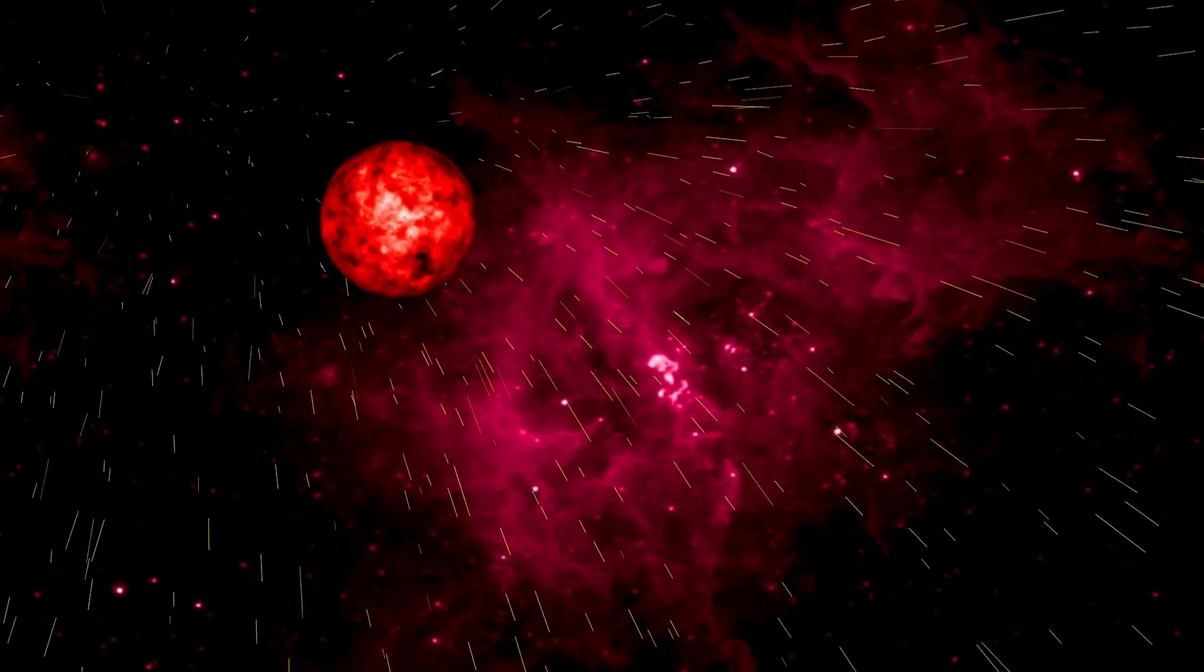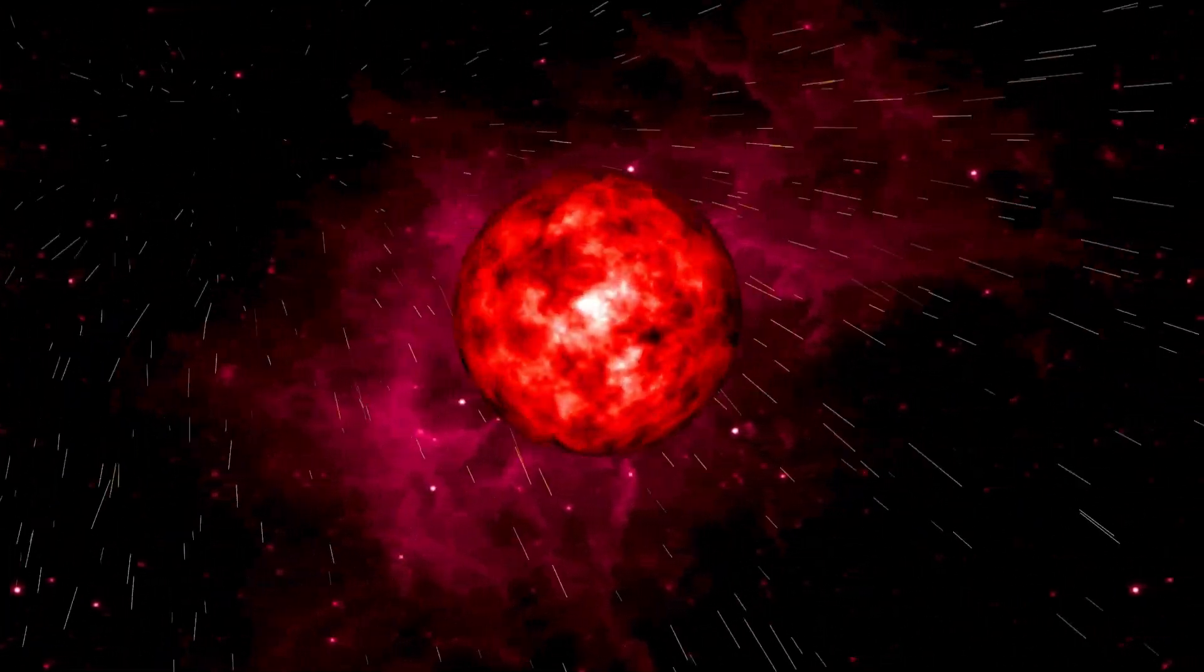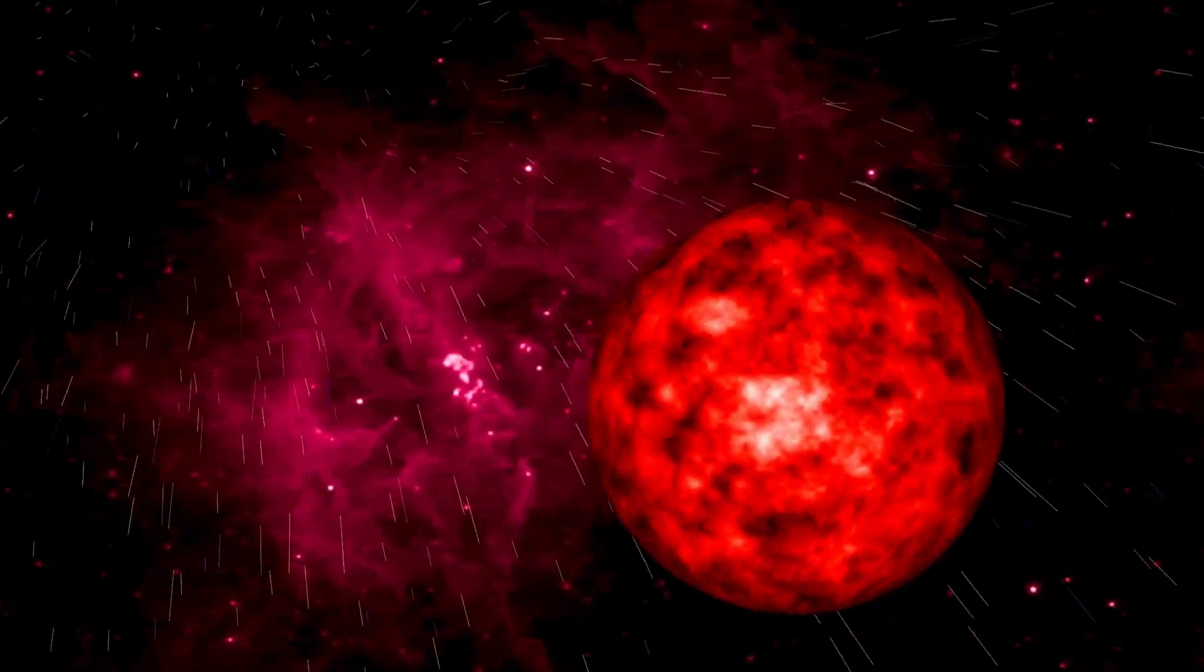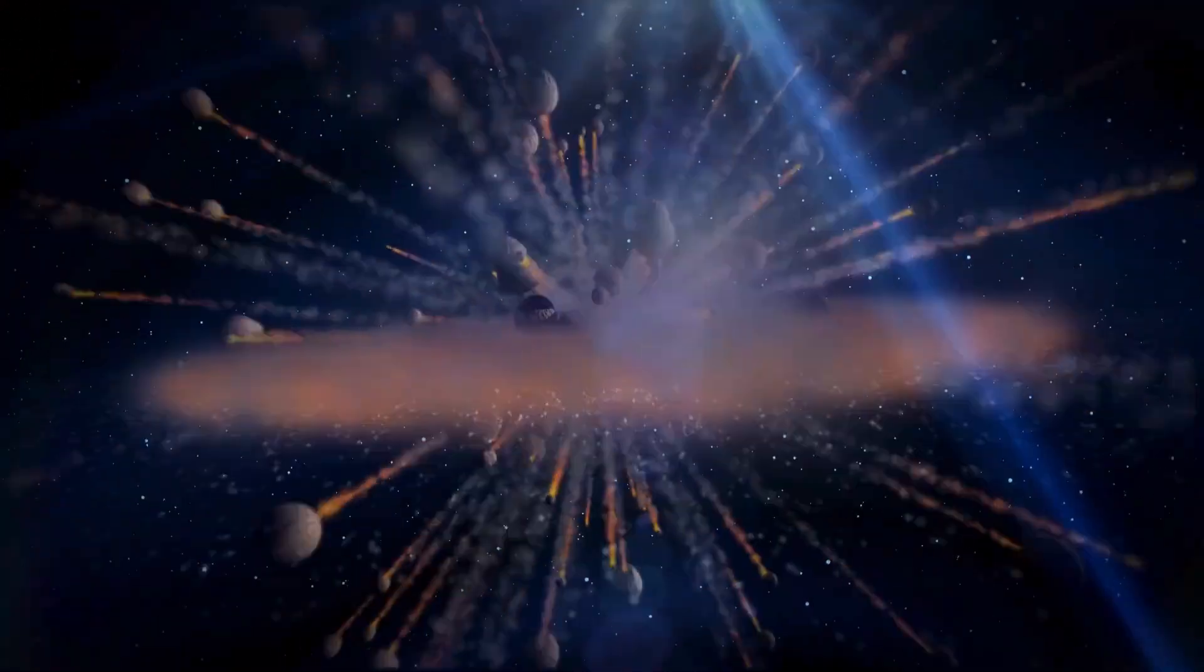Betelgeuse, a red giant star, is one of the most fascinating objects in our universe. If it were placed where our sun is, its immense size would stretch out to the orbit of Jupiter.